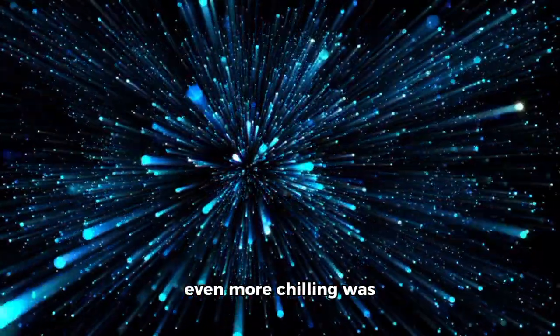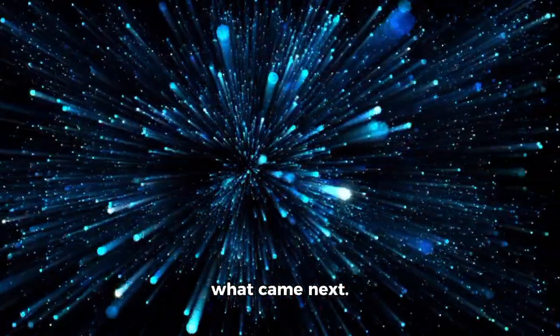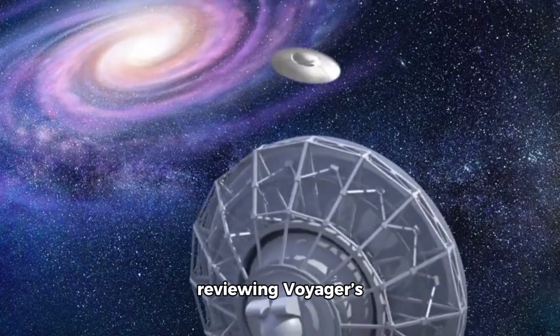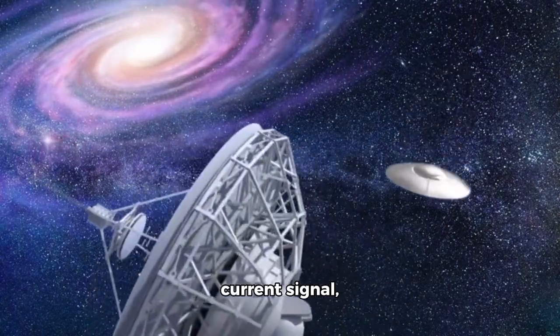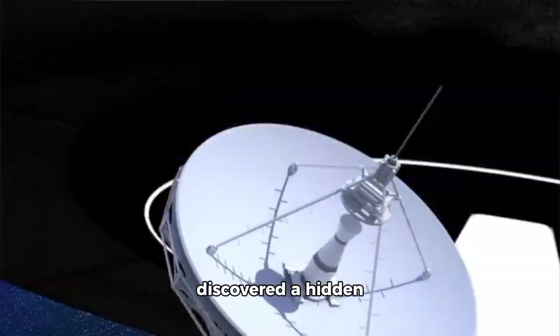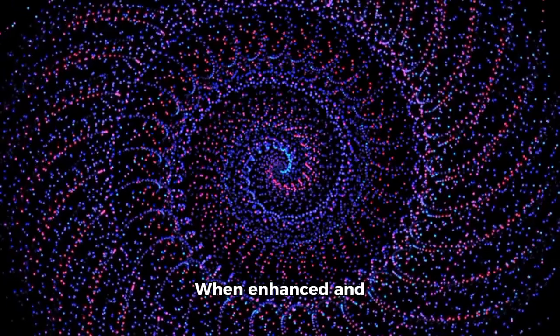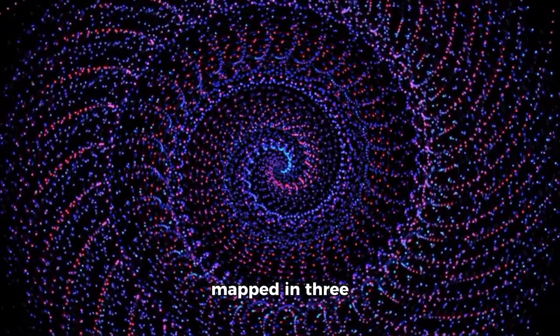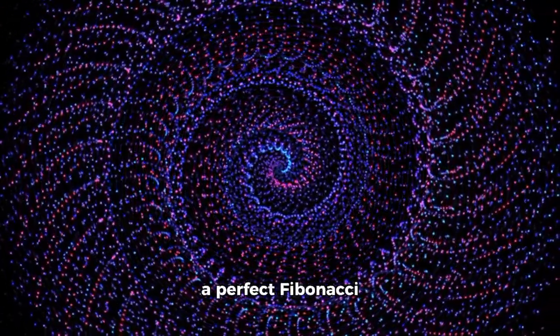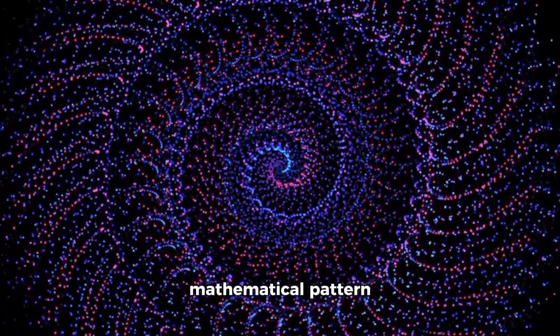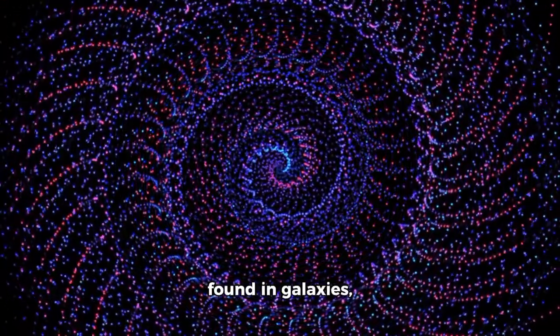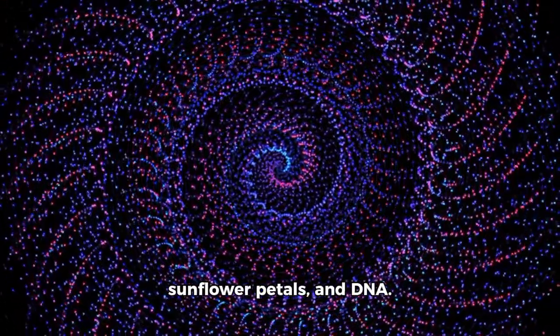What made this event even more chilling was what came next. NASA's engineers, reviewing Voyager's current signal, discovered a hidden frequency that was constant and steady. When enhanced and mapped in three dimensions, it revealed a perfect Fibonacci sequence—a spiral, a mathematical pattern found in galaxies, sunflower petals, and DNA. This was not random. It was intentional.